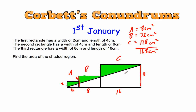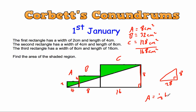Now we need the area of the triangle. The area of a triangle is half the base times the height. The height is 8. The base will be 4 plus 8 plus 16: 4 plus 16 is 20, plus 8 equals 28cm. So the base of the triangle is 28cm and the height is 8cm. Area equals half the base times the height: 14 times 8 equals 112cm squared.